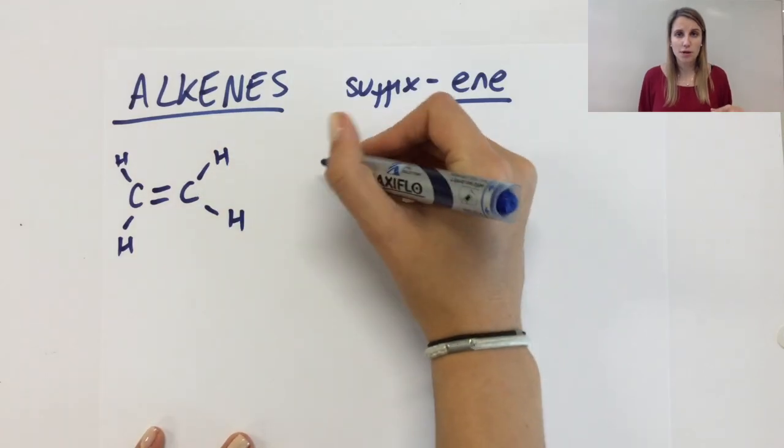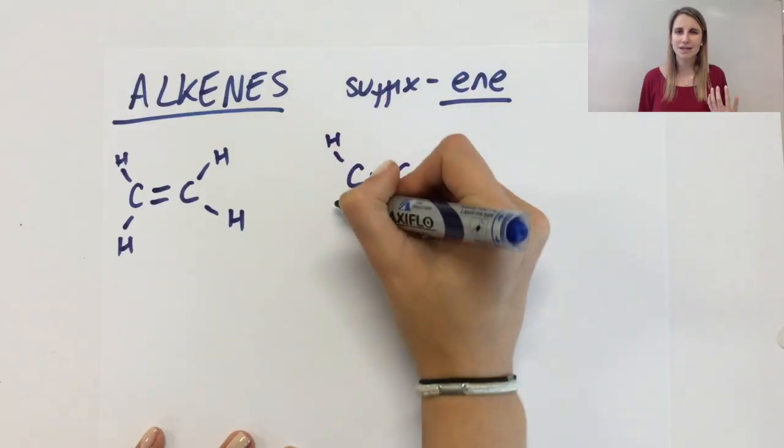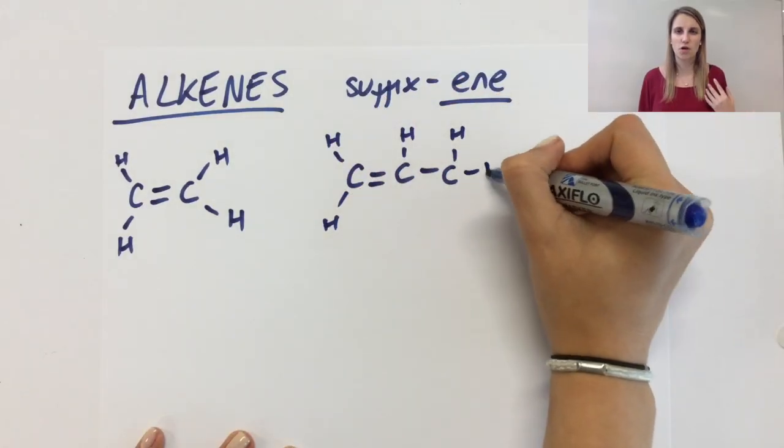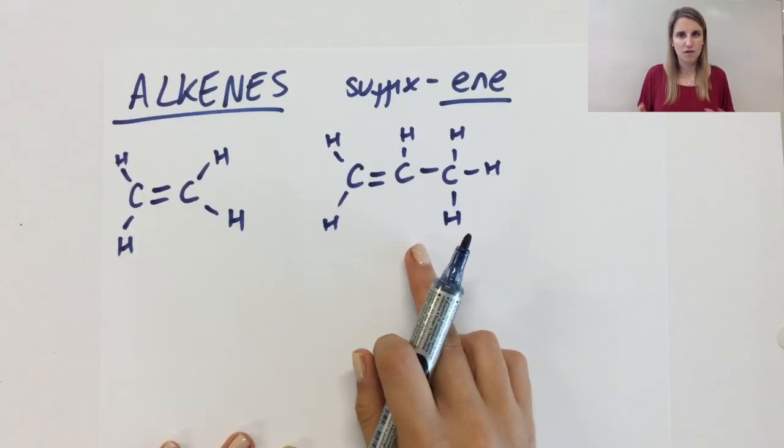So there's this one with two carbons, the next one with three carbons, but it doesn't matter if I draw the double bond on the left side or the right side because they kind of look the same if you flip them over.